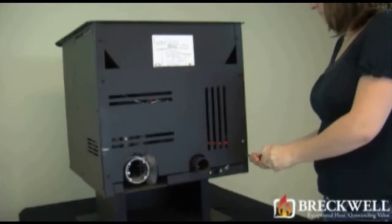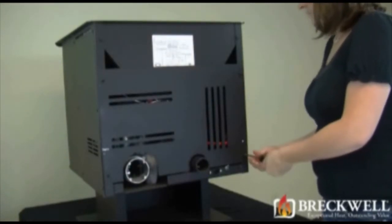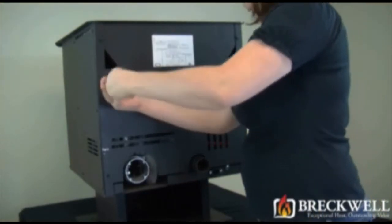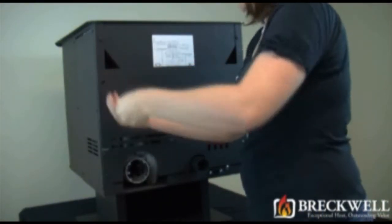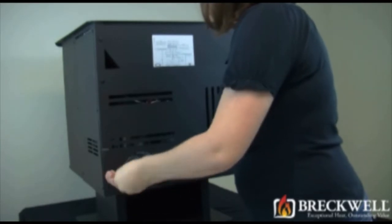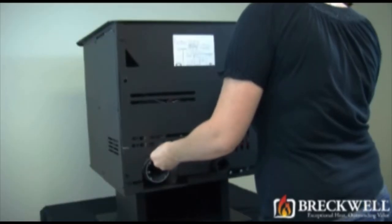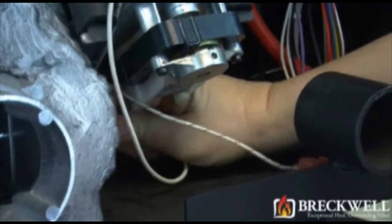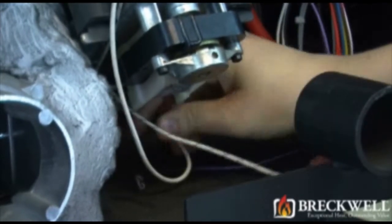Now, using your number 2 Phillips screwdriver, loosen the screws holding the back of the stove in place. You do not need to fully remove these screws. Once these screws are loose, you can easily lift the back of the stove up and away, being sure to set it aside from your work area.